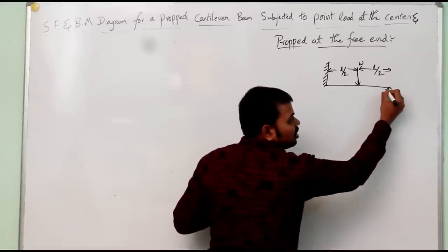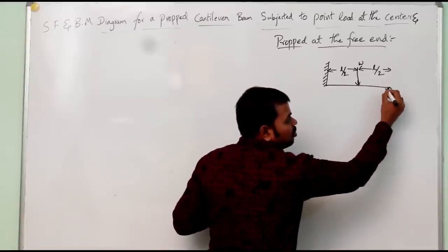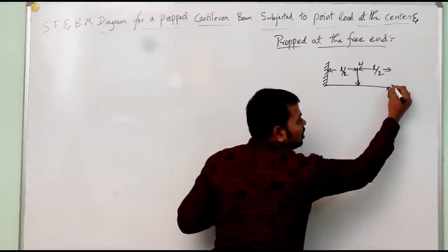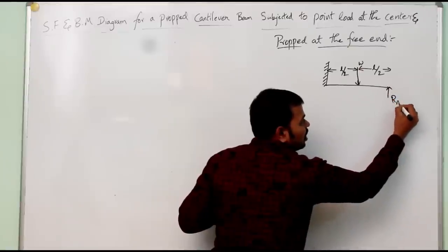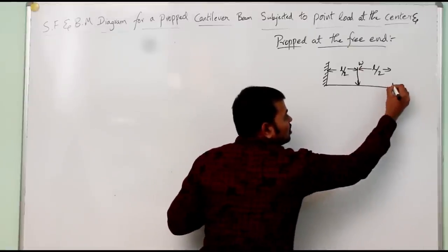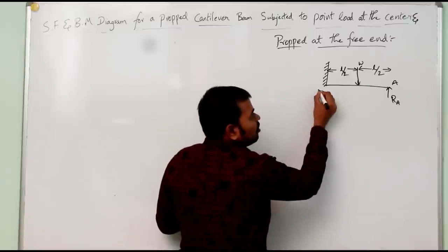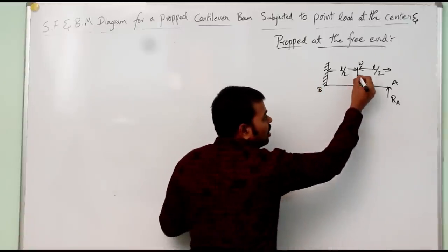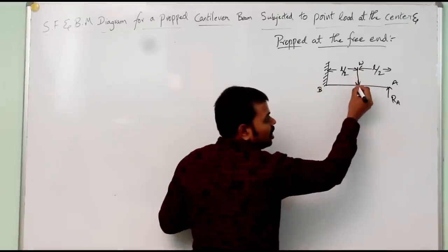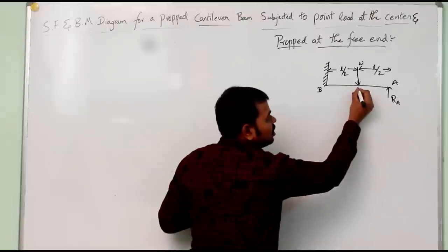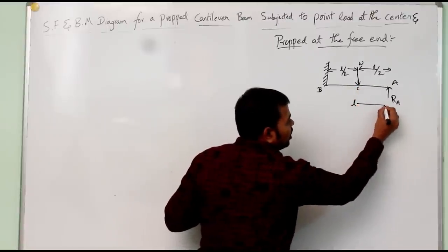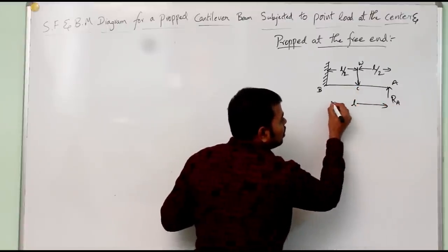The vertical prop at the free end provides a reaction Ra; this end is labeled A. The fixed end is labeled B, and the point where the point load acts is labeled C. The total length of the beam is taken as L.